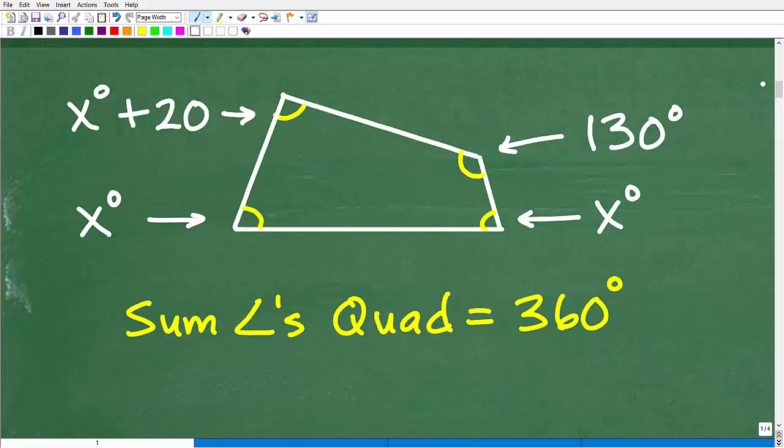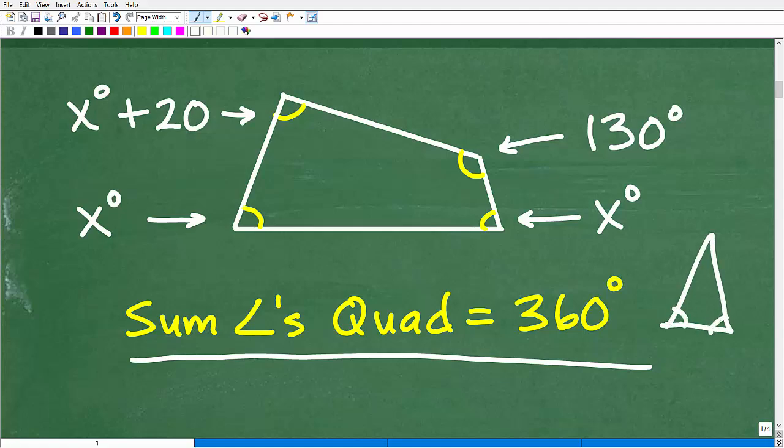But the fact here that we need to understand is that the sum of the angles in a quadrilateral is 360 degrees. So this is very much along the line of the sum of the angles of a triangle is 180 degrees. You need to know these basic facts.